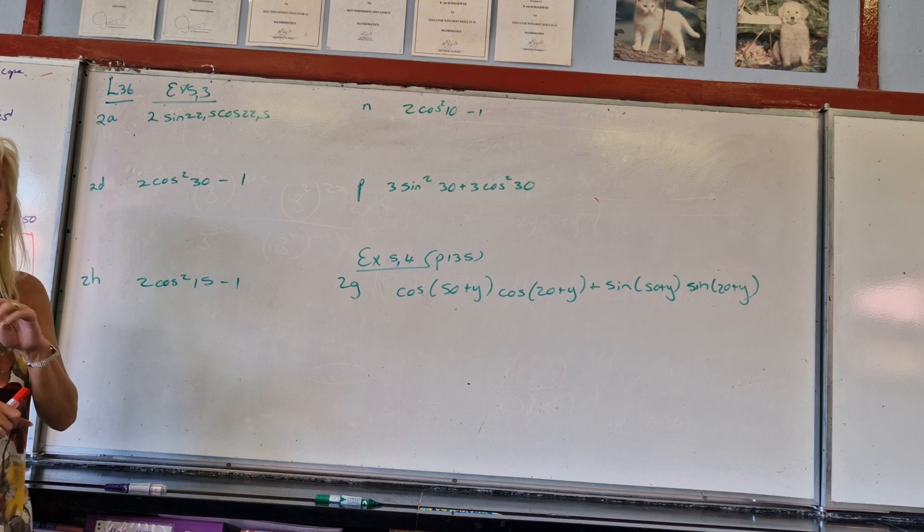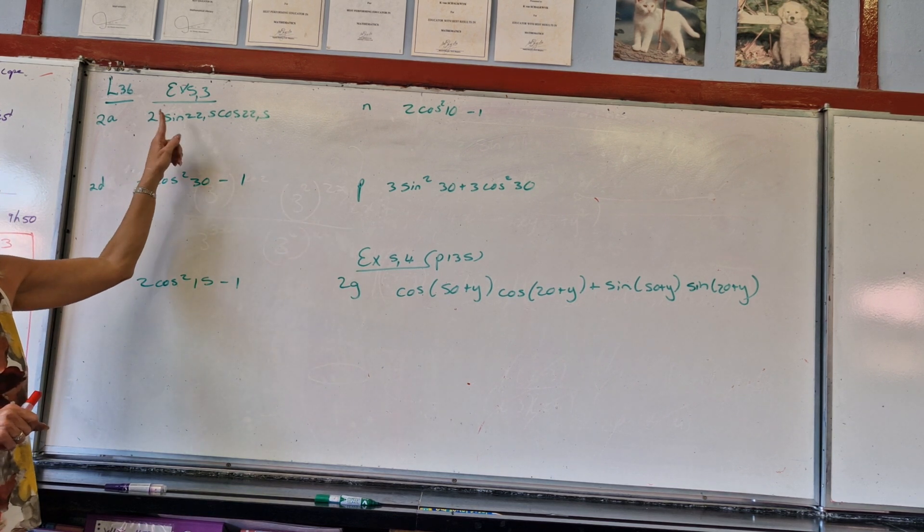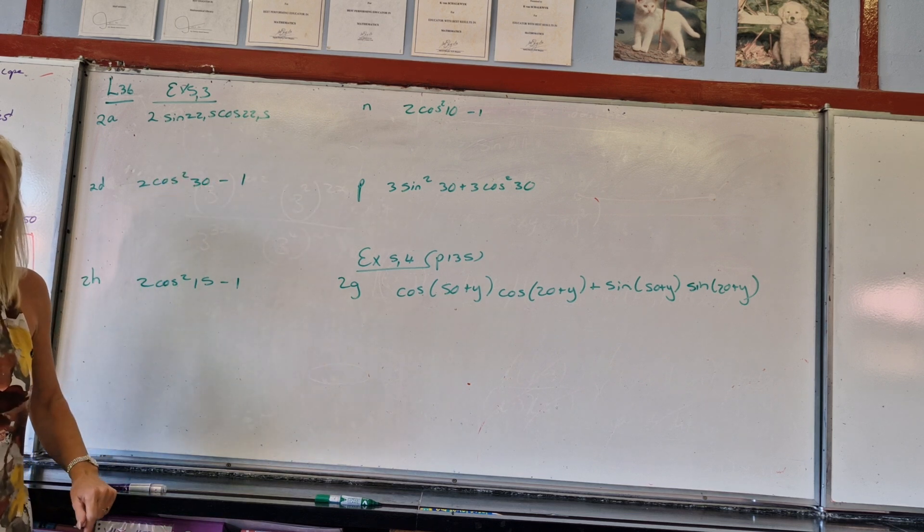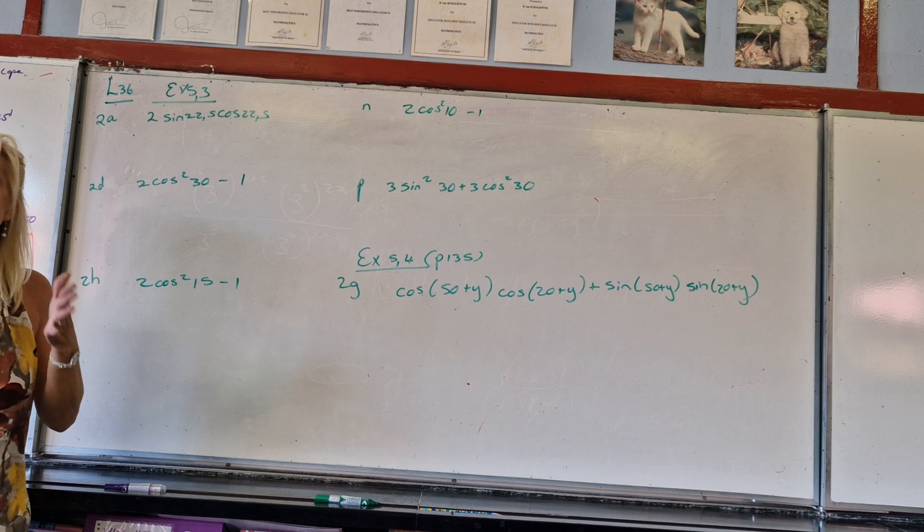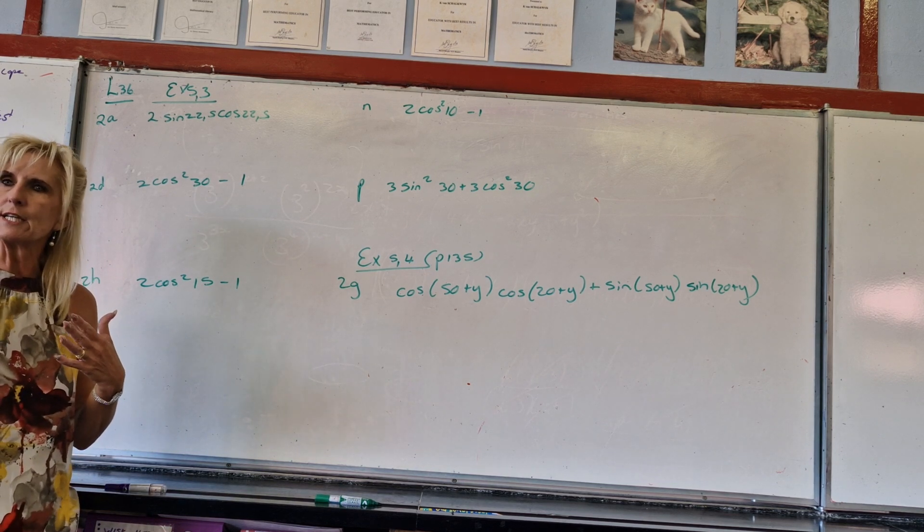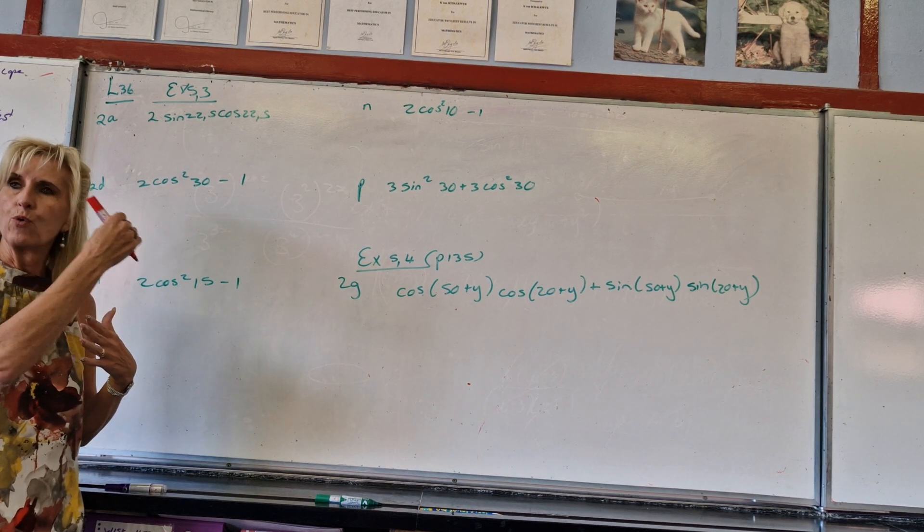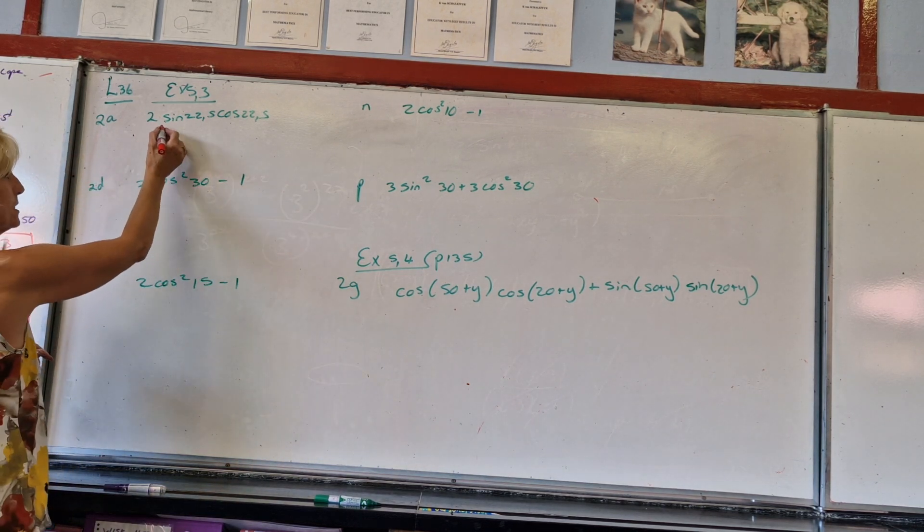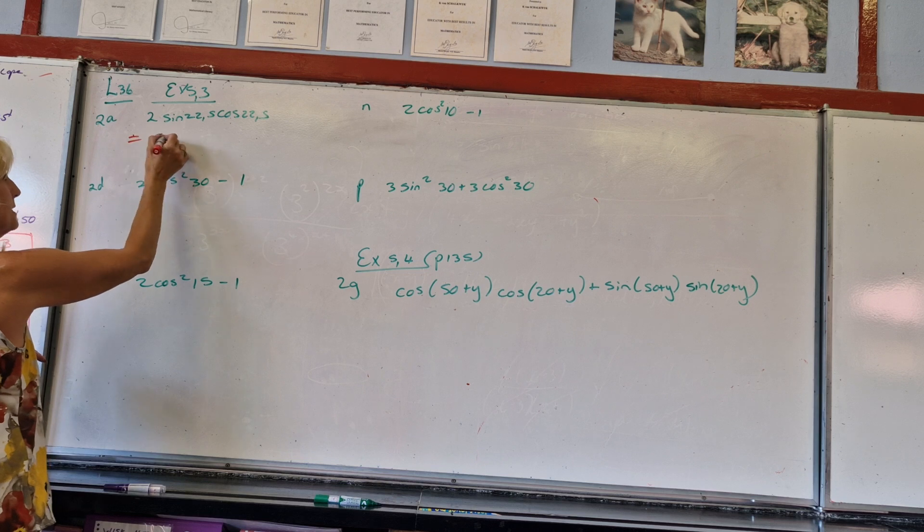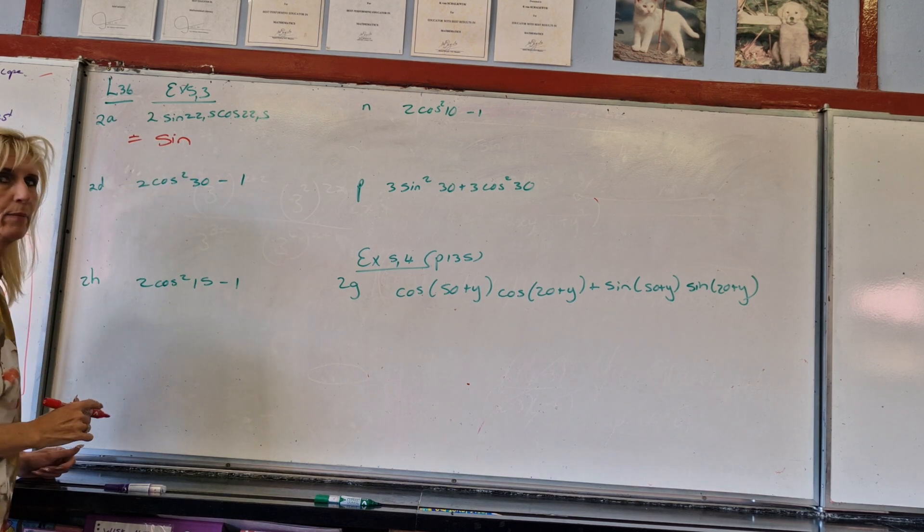And you don't know it yet because you haven't studied it. 2sin(something)cos(something) is a sin double angle. Nobody's going to tell you that. You've got to know it. It is on your formula sheet, but it's not going to jump out at you unless you're working at it to identify that this is 2sin(x)cos(x) as a sin double angle. Level of what?